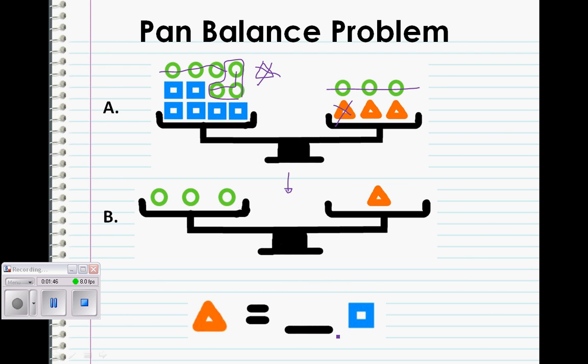We are trying to find out how many squares is equal to one triangle. If we are finding out one triangle and we have two triangles, we just divide them in half. And we move it down here. Since we divided it in half, we have to do the same with the squares. Six squares divided by two equals three.